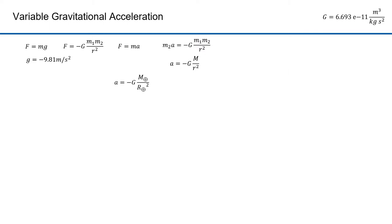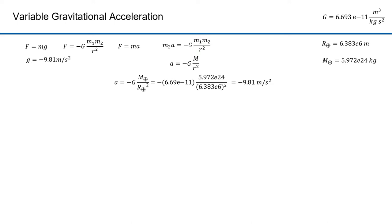Big G is the gravitational constant; it equals 6.693 times 10 to the minus 11. The mean radius of the earth is 6.383 times 10 to the 6 meters. The radius of the earth varies depending on where you are, so this is an approximate value. The mass of the earth is 5.95 times 10 to the 24 kilograms, and if I plug in those numbers I get minus 9.81 meters per second squared for acceleration when r is the earth's radius.